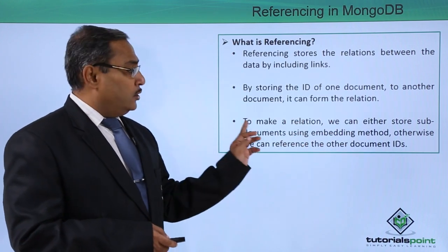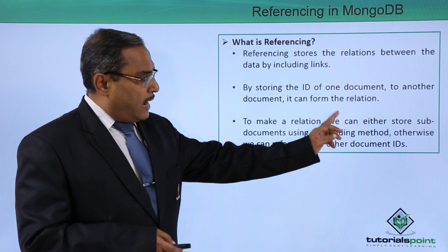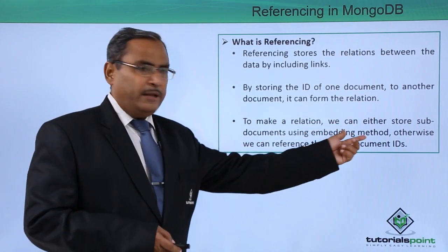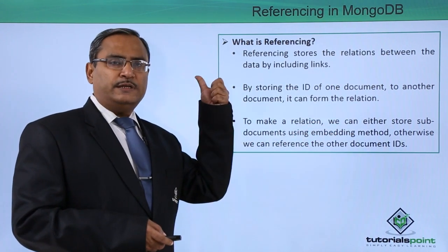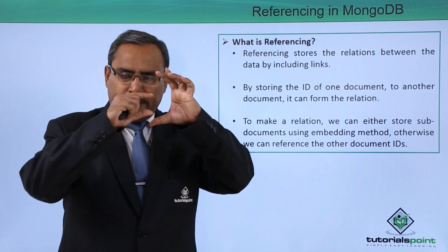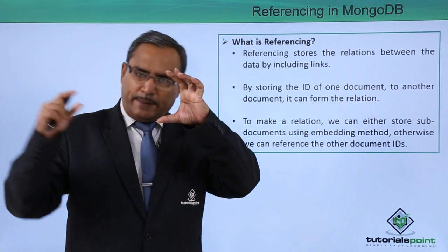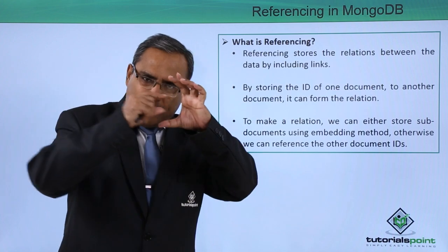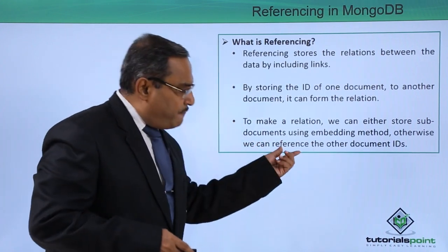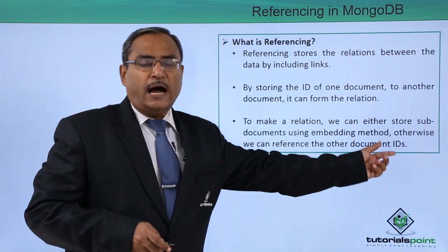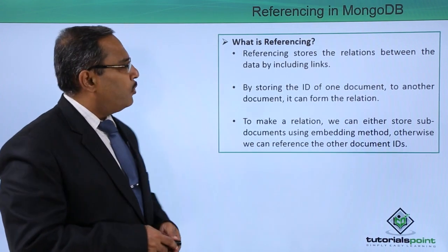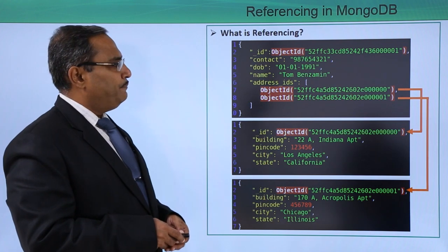To make a relation, we can either store sub-documents using the embedding method, which we discussed in the previous video — where one document contains another embedded inside it — or we can reference the other document's ID from the parent one. Let us go through a diagram for better understanding.